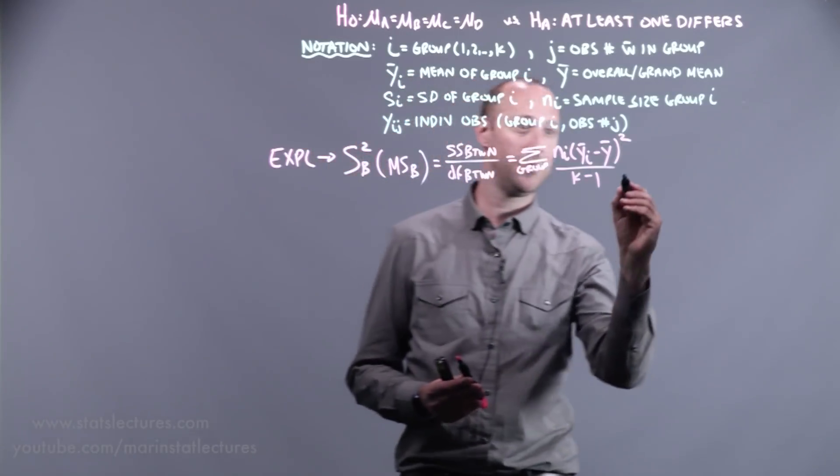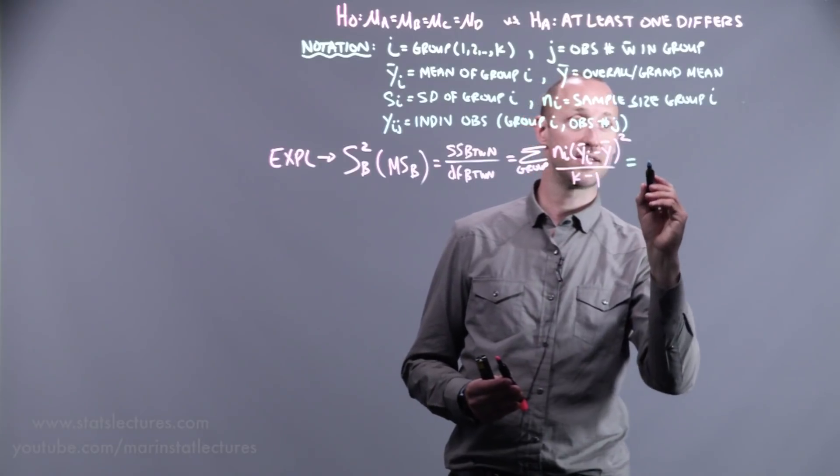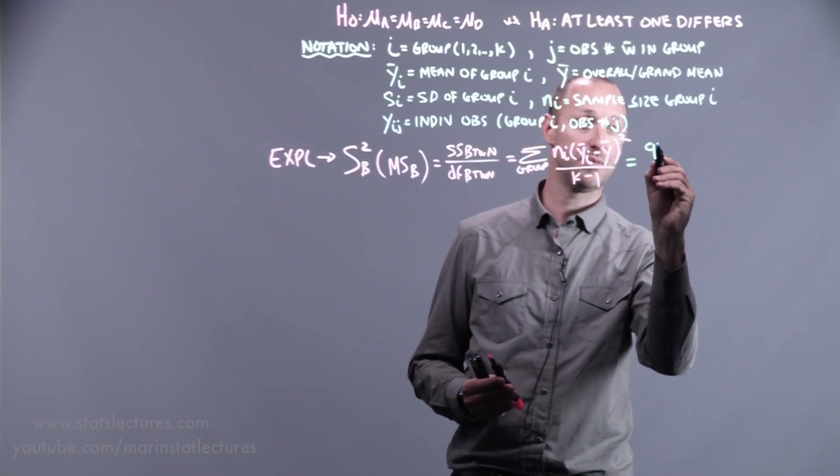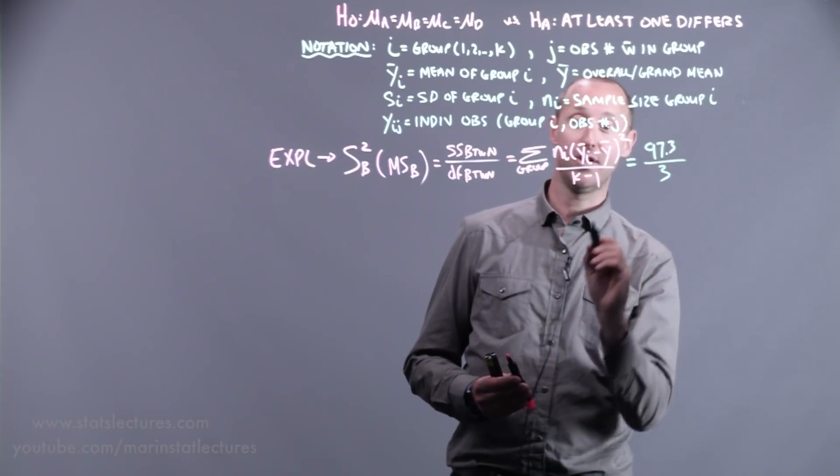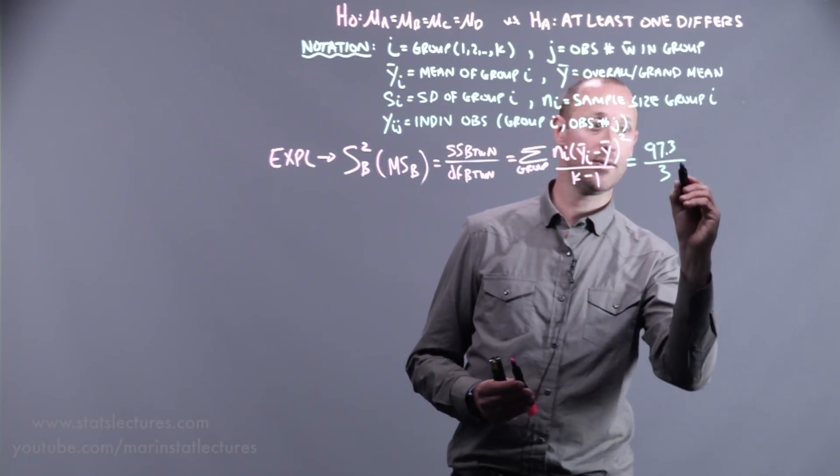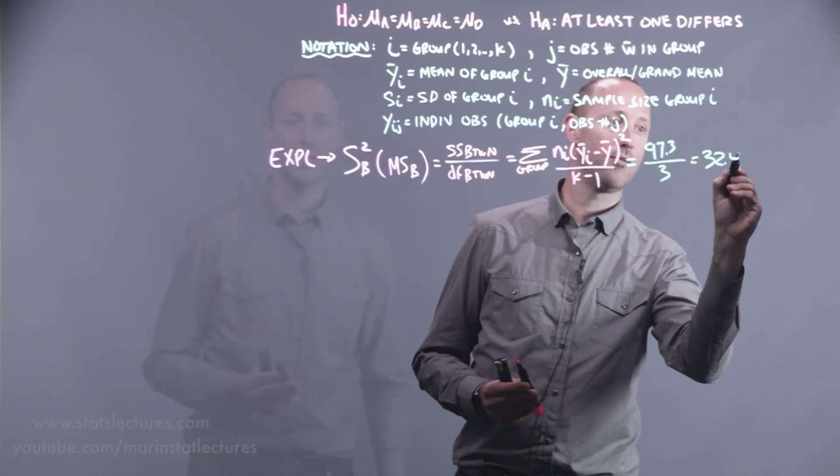divided by its degrees of freedom. If we work that out, for example, we'd find that the sum of squares between groups, or the explained sum of squares, is 97.3. Degrees of freedom three, four groups minus one, and that's going to come out to 32.4.